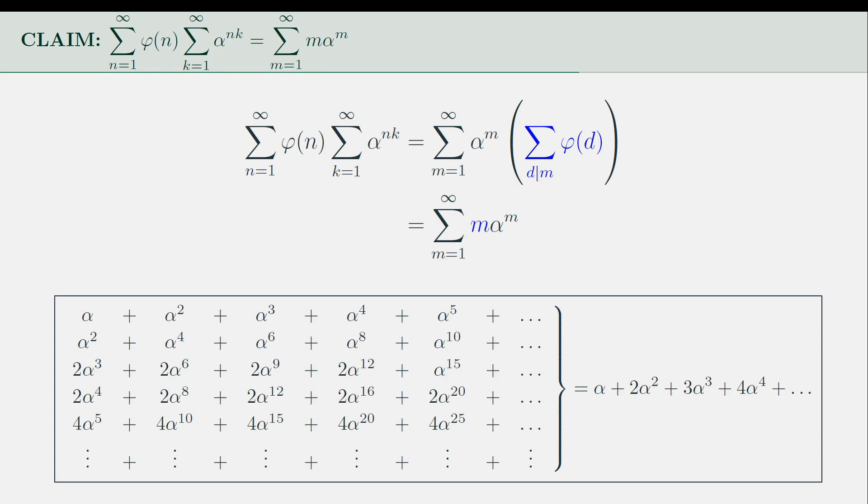Therefore, the double summation simplifies to m times α^m, where m runs from 1 to infinity, as I have claimed a while ago.